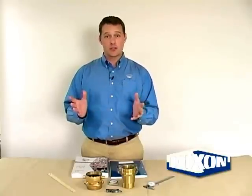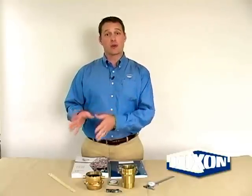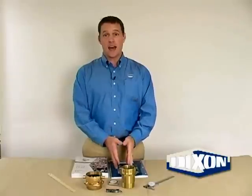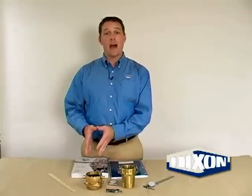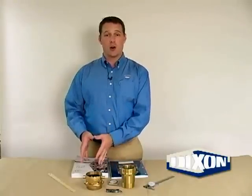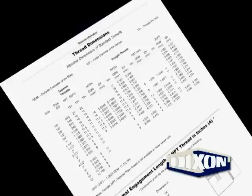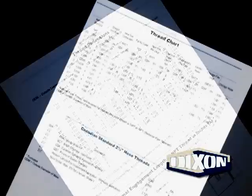Throughout the presentation we will be referring to charts and data that are found in the back of all of our catalogs under technical information. The thread dimension chart shows the dimensions of the various firehose threads that we will be referring to later.